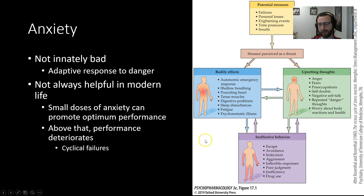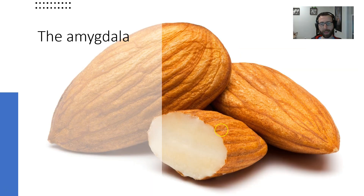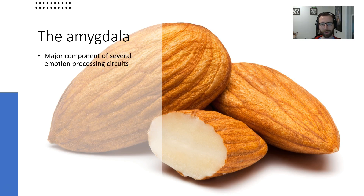We'll talk about some of these aspects in more detail as we move on, but this is just the general idea of what stress and anxiety responses look like psychologically and physiologically. We cannot talk about stress and anxiety without talking about the amygdala. The amygdala — meaning 'almond' — is roughly almond-shaped under a microscope. It is a major component of several emotion processing circuits and a really important part of the brain for processing emotional content.